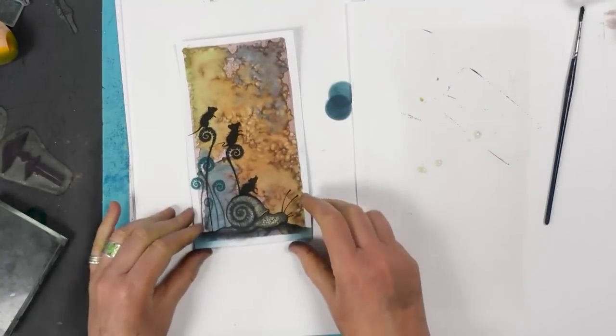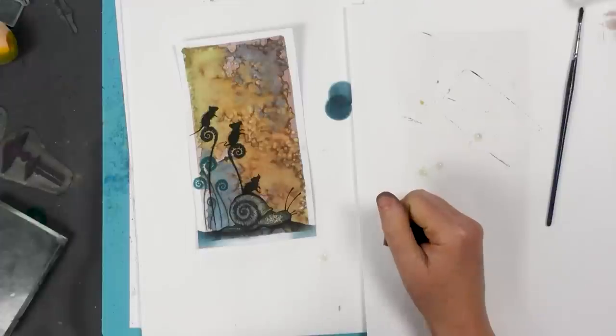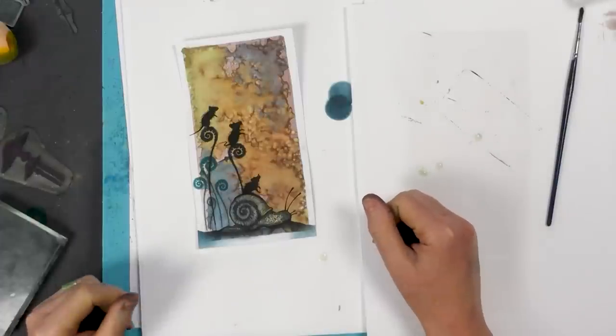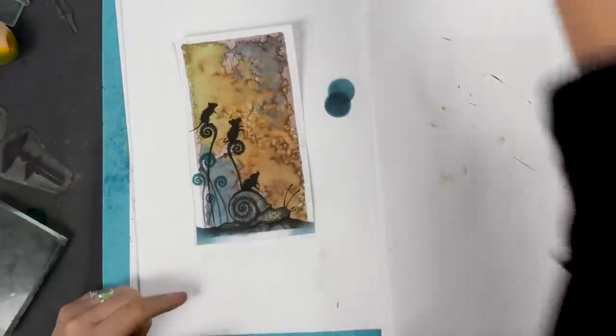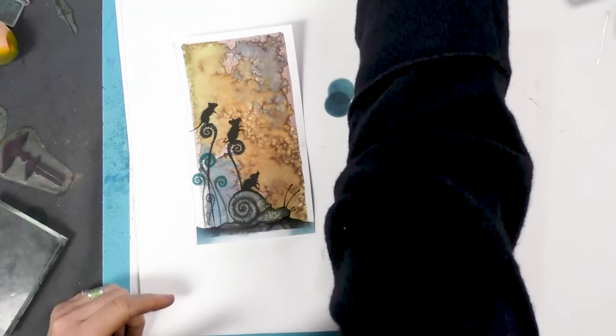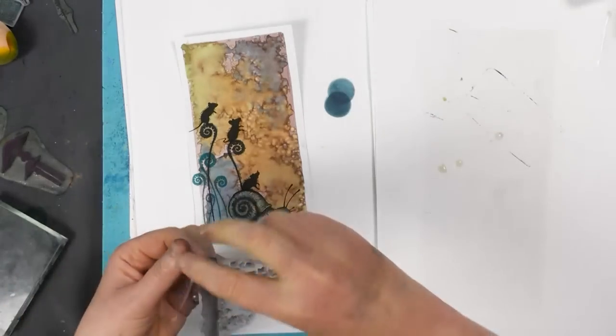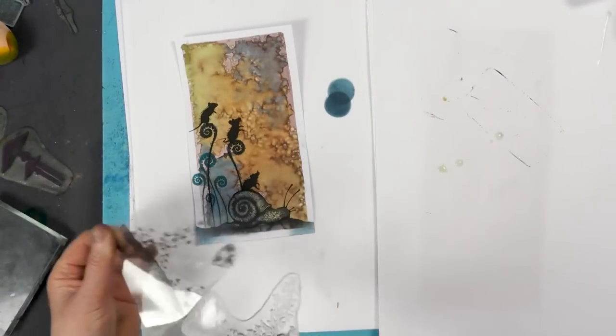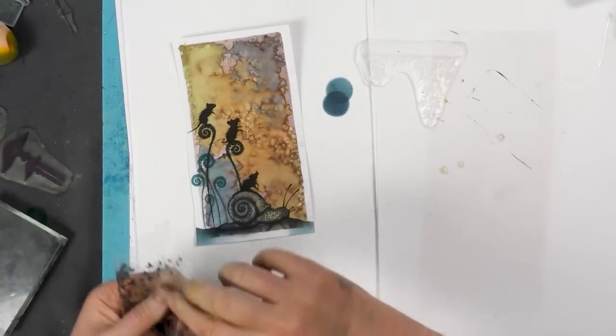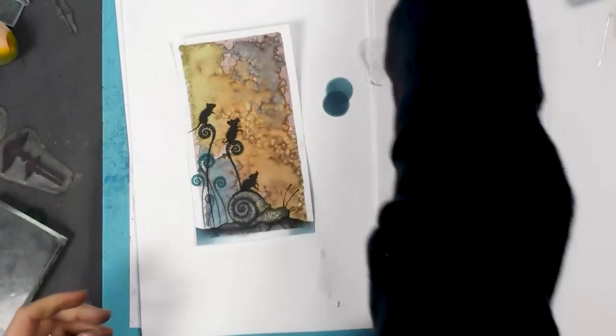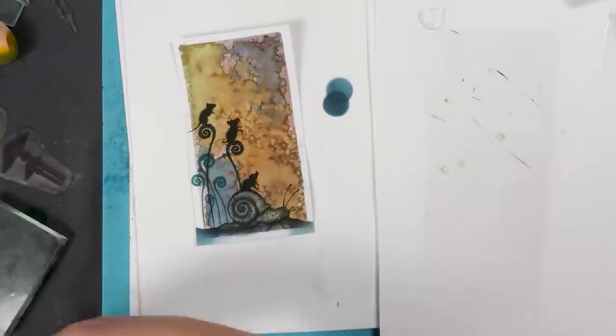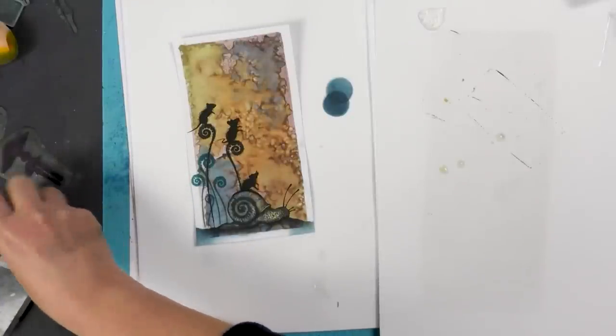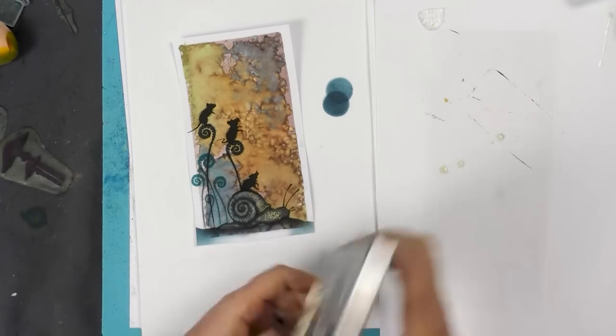So we've got our lovely little mice and they're all looking at something, aren't they? So we need to think about what we're going to put up here. We've got a branch here with some foliage. So I think I'm just going to use that across the top. Let's give it a go anyway. That's the idea I've got in my head.